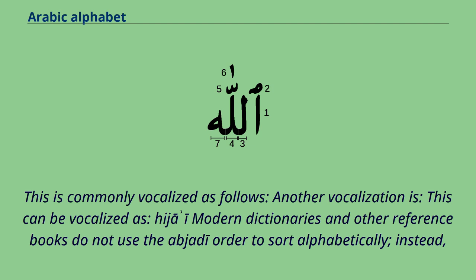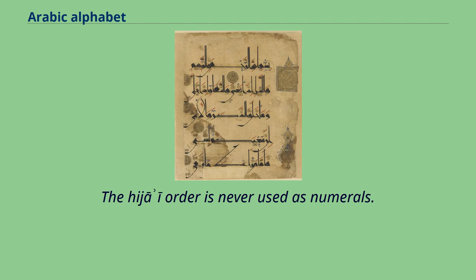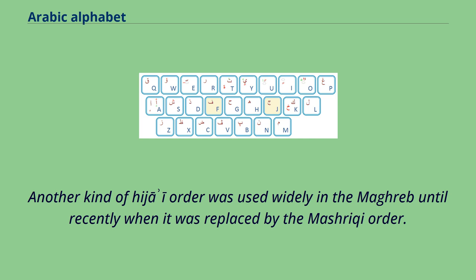Modern dictionaries and other reference books do not use the Abjad order to sort alphabetically. Instead, the newer Hijai order is used, wherein letters are partially grouped together by similarity of shape. The Hijai order is never used as numerals. Another kind of Hijai order was used widely in the Maghreb until recently, when it was replaced by the Mashriqi order.